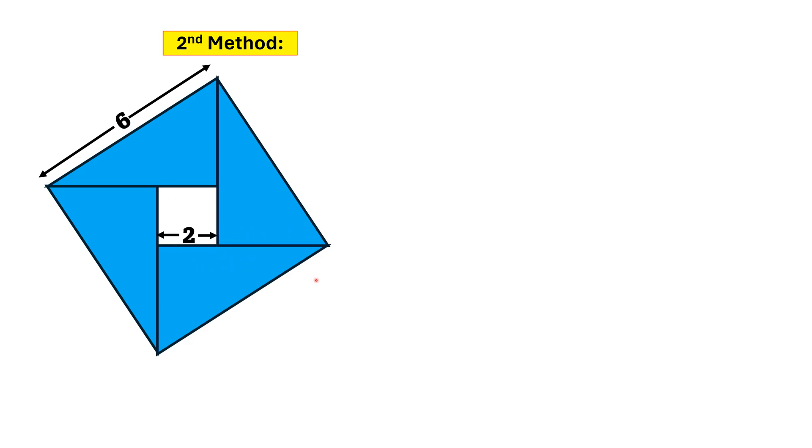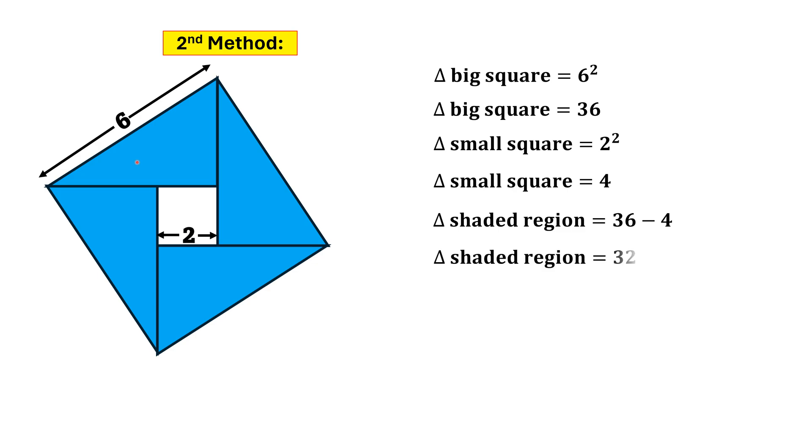The area of the big square is equal to 6² = 36, and area of the smaller square is 2² = 4. So area of the shaded region is 36 - 4, that is 32.